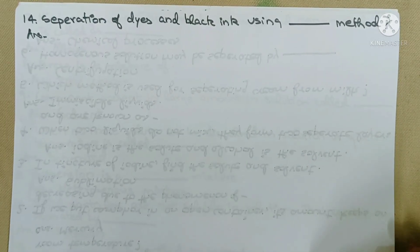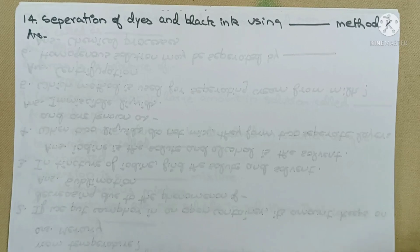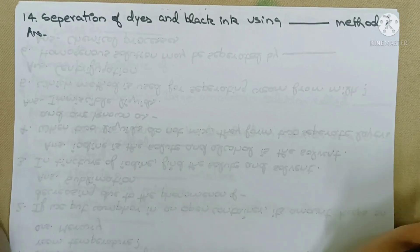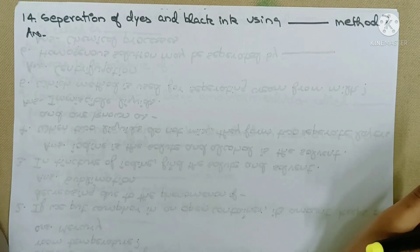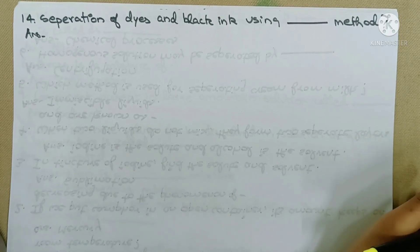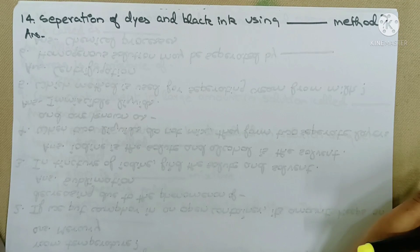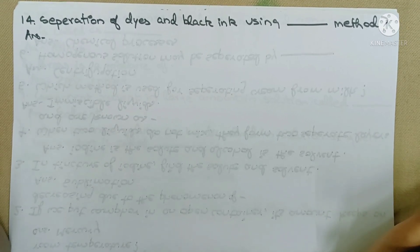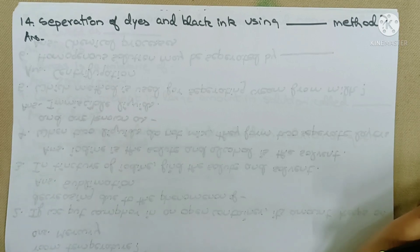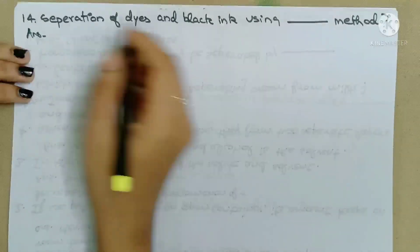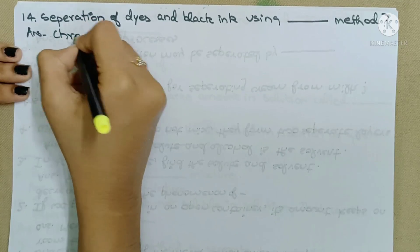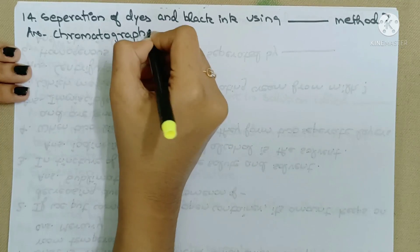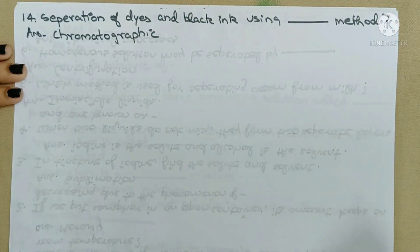Next question: Separation of dyes and black ink uses which method? Dye is a mixture of two or more colors. To separate these colors, we use the chromatographic method.